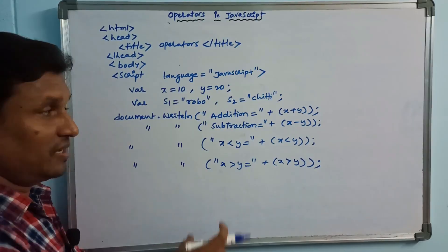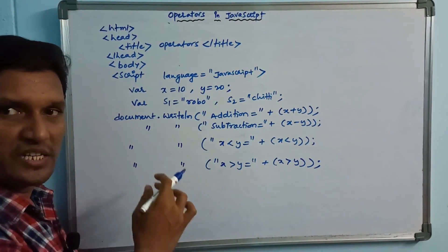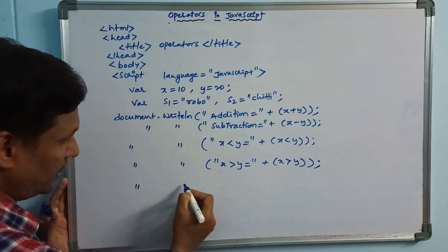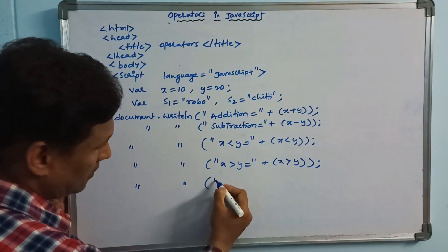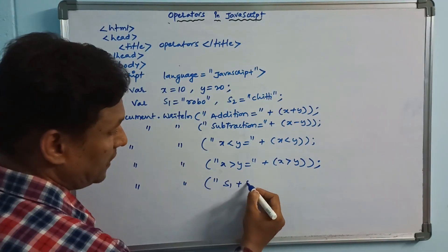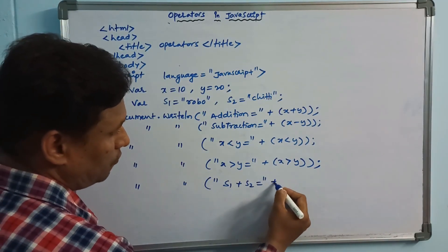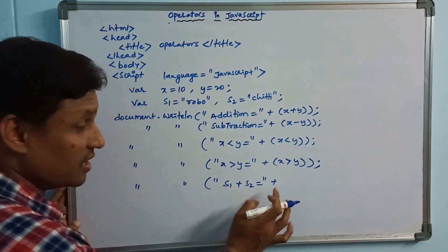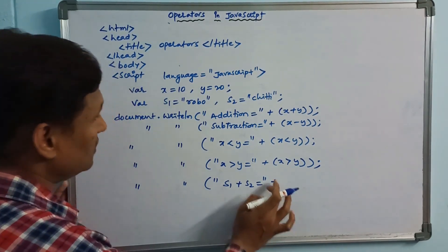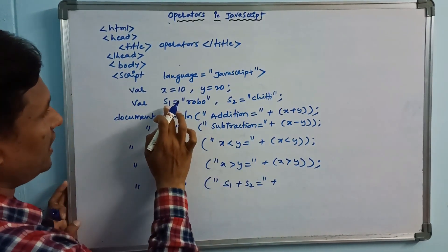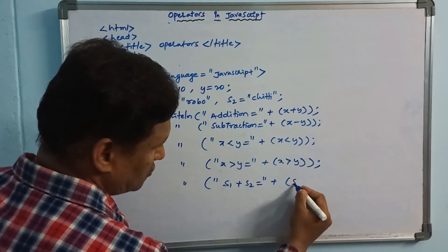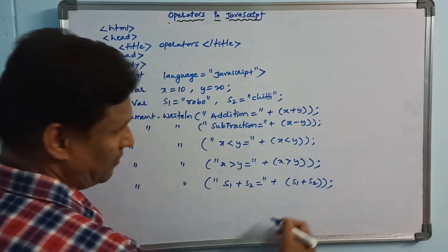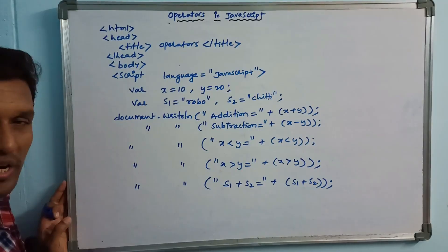Next, we move on to the string operator. Using document.write, we print s1 plus s2. The result will concatenate the two string values using the plus operator.